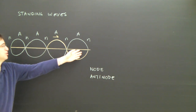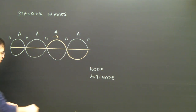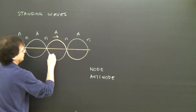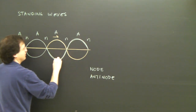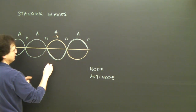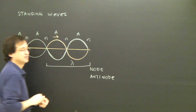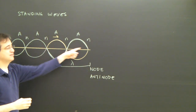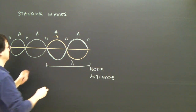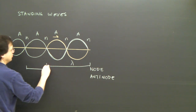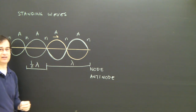It doesn't always look like this — we don't necessarily always have four loops. Each one of these loops is made up of part of a wave. That wave creating it represents the wavelength. So two of these loops are equal to the wavelength, which means every node-to-node distance is half a wavelength.